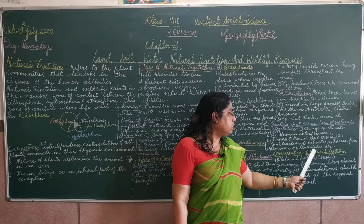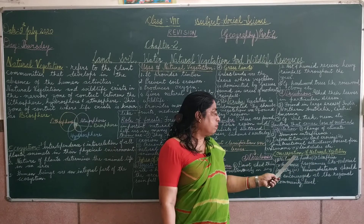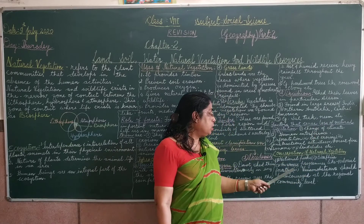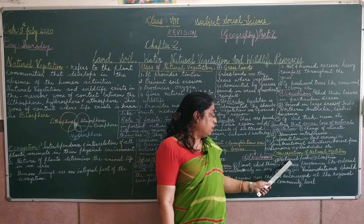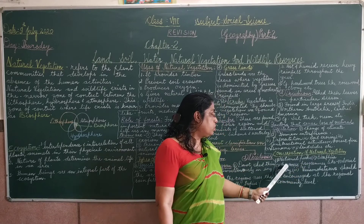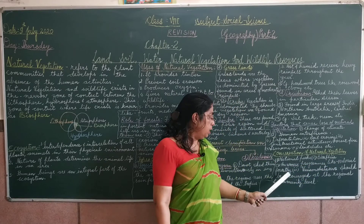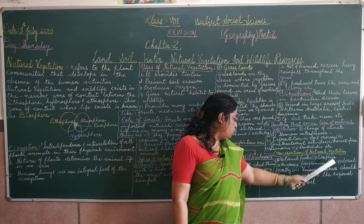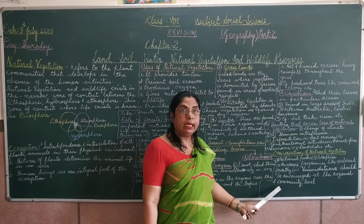The next topic is conservation of natural vegetation. Ways to conserve natural vegetation include: national parks, biosphere reserves, and awareness programs like social forestry. Conservation efforts should be encouraged at the regional and community level.